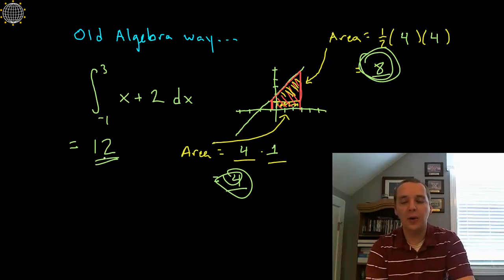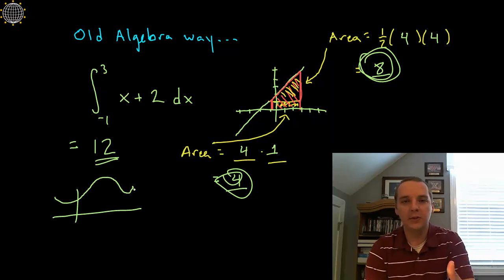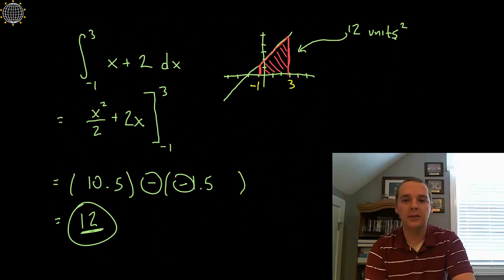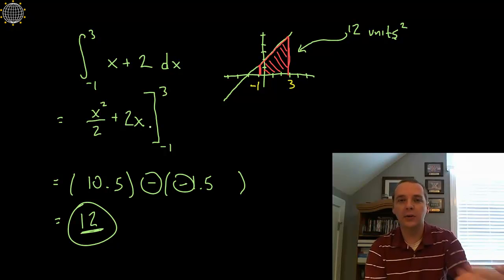Now from here on out we'll probably never ever do it this way again because this only happened, this only worked because these were nice geometrical shapes. If your function has a smooth top that's curving and bending, there's no nice geometry formulas for things that look like that because they're not triangles, they're not rectangles, they're not circles and things of that nature. So I did this just to convince you that this fundamental theorem of calculus is working as it should and it's a great tool to use.